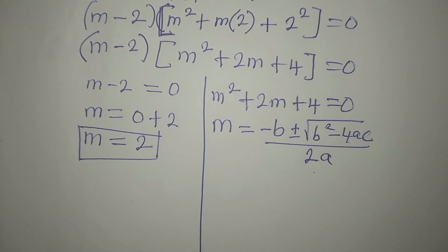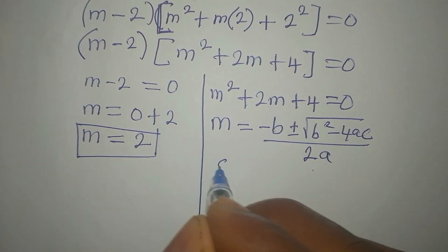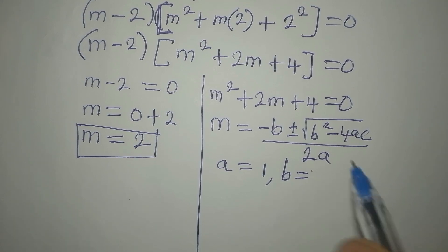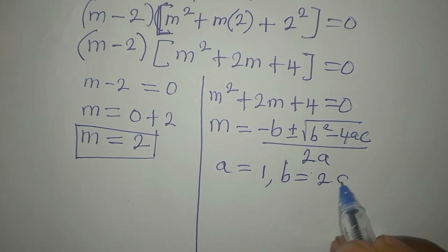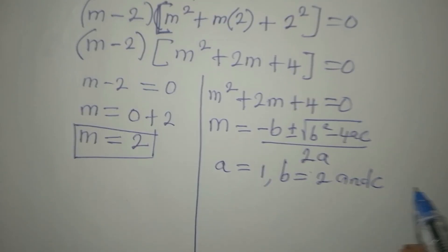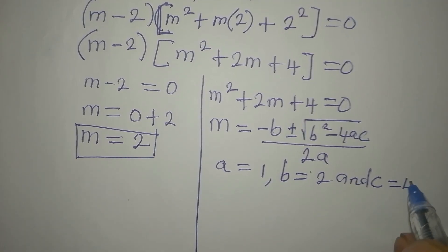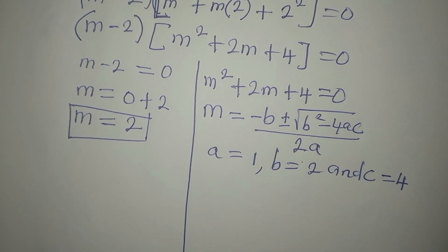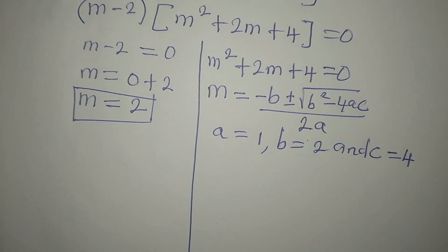But then you have to know your abc. a is a coefficient of m squared. It is 1. b is a coefficient of m. It is 2. And then our c is equal to 4. That is the constant in the quadratic equation. Now, let us substitute into the equation.